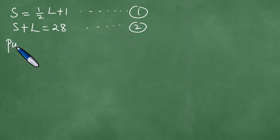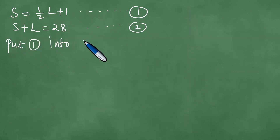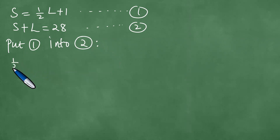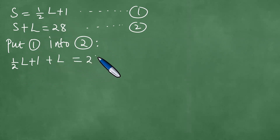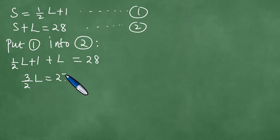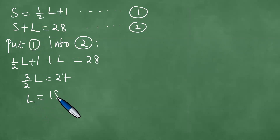Now we put equation one into equation two. In the place of S, we substitute one-half L plus one, giving us: one-half L plus one plus L equals 28 meters. Combining the L terms, we get three-halves L equals 27. Dividing by three and multiplying by two gives L equals 18.